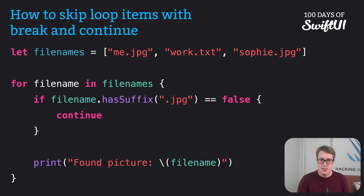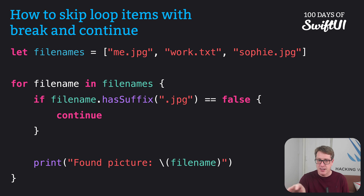So it'll process me.jpg — yes, fine, found picture. Then work.txt — nope, it fails the test, so continue. And then sophie.jpg will pass the test and print out found picture.